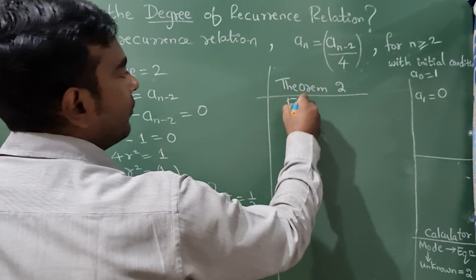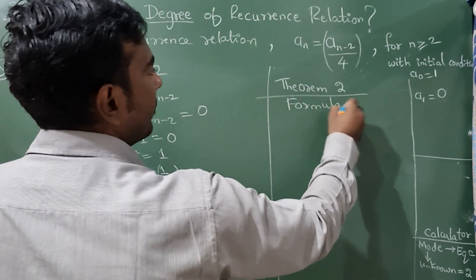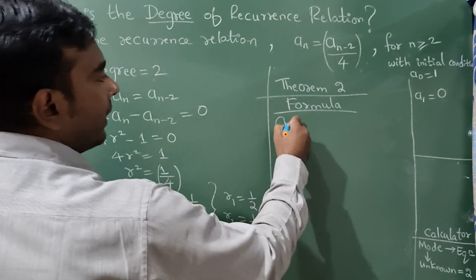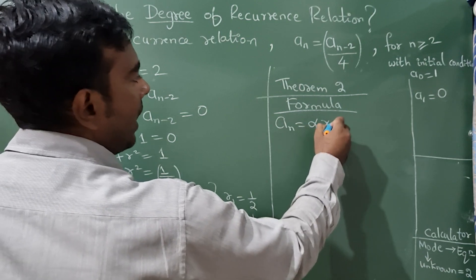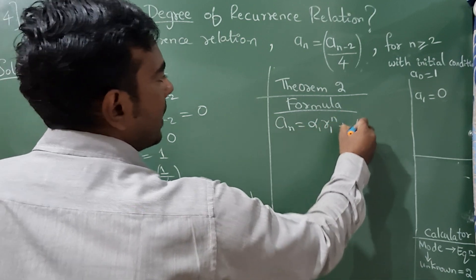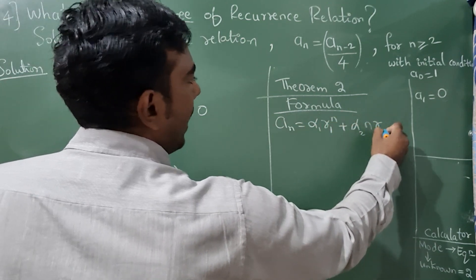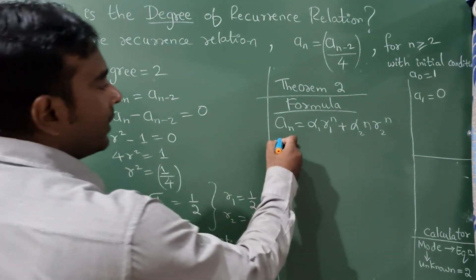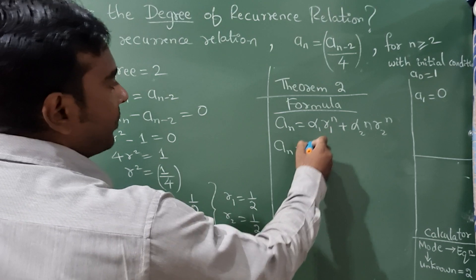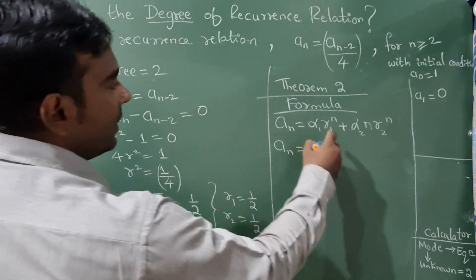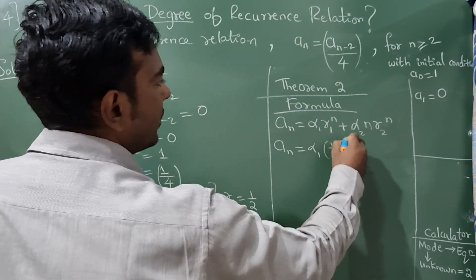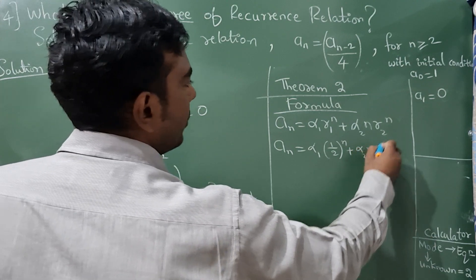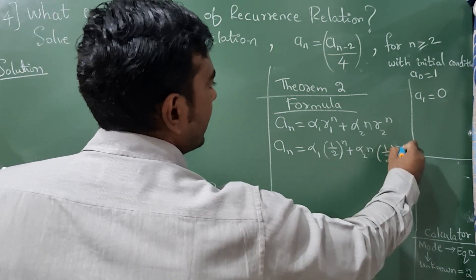In that the formula is a_n = α₁r₁ⁿ + α₂·n·r₂ⁿ. Now this is a_n = α₁(1/2)ⁿ + α₂·n·(1/2)ⁿ.